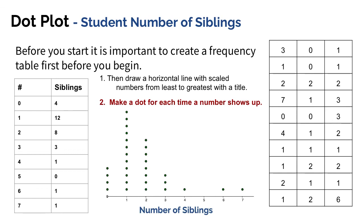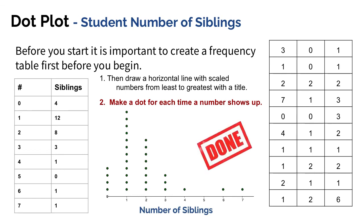The last thing I want to mention is that when you make your very first dot, you don't want to make it directly on the number line. You want to make it just slightly above the number line, like I did right here, so this dot is just slightly above the number line when you make your dot plot.